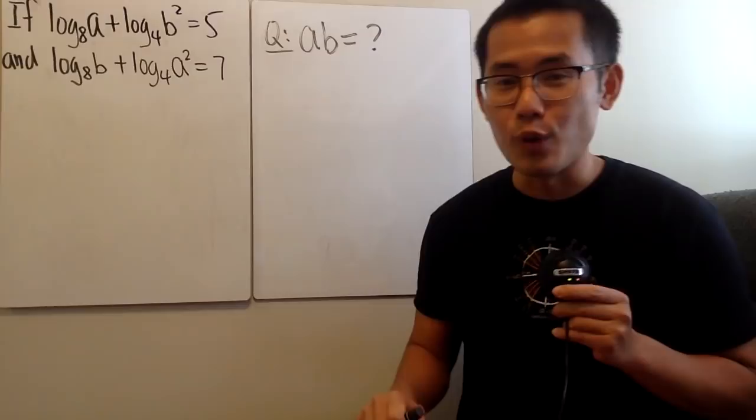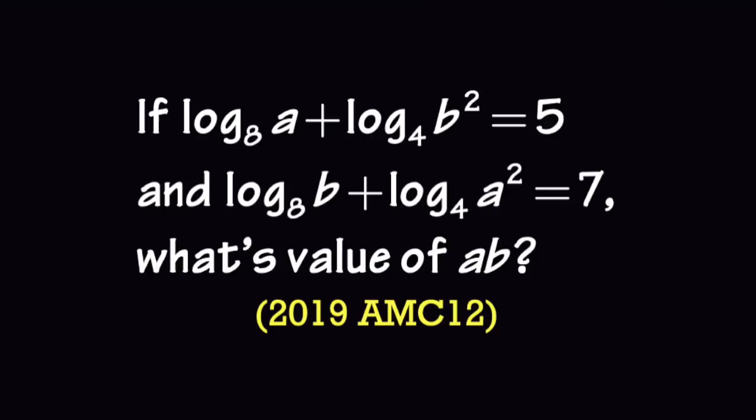I can finally sit down when I do math. I have three logarithm questions for you guys in this video, and they are from the AMC or AME questions. Here's the first one: we have log base 8 of A plus log base 4 of B squared is equal to five, and log base 8 of B plus log base 4 of A squared is equal to seven. The question is asking us to find out the value of A times B.